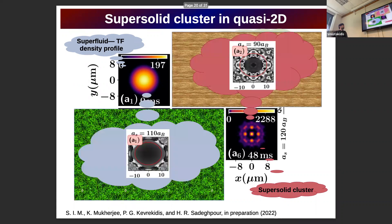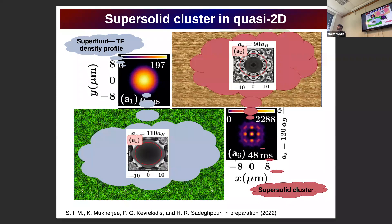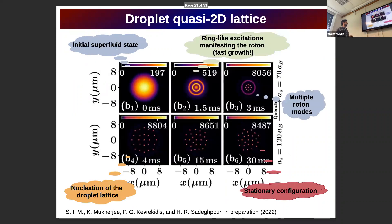Just to mention here, I also depict the wave function for the supersolid and for the superfluid. For the superfluid the density is homogeneous, while for the supersolid you have undulations in the phase of the wave function. This is another way to distinguish these phases.